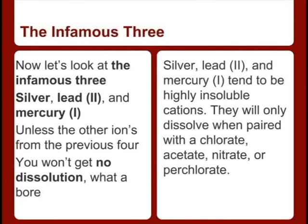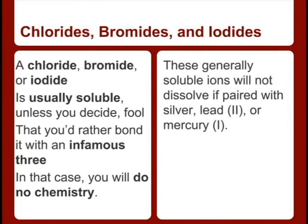Silver, lead 2+, and mercury 1+ — unless the other ion is from the previous soluble group, you won't get no dissolution. A chloride, bromide, or iodide is usually soluble, unless you decide to bond it with one of the infamous 3. In that case, you will do no chemistry.